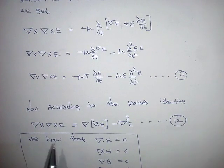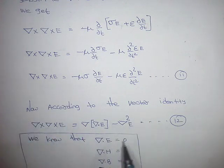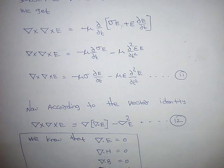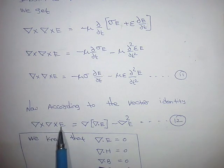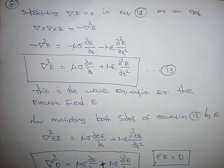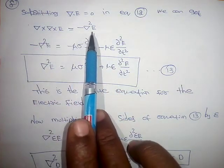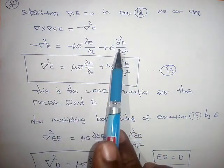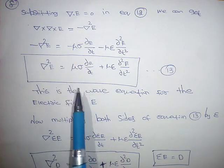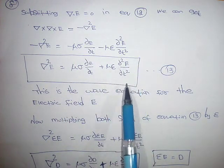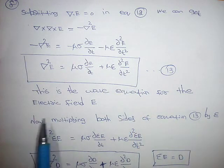Using the vector identity: del cross del cross E equals del(del dot E) minus del squared E. We already know that del dot E equals zero, so the first term vanishes. Therefore del cross del cross E equals minus del squared E. On the left-hand side and right-hand side, since both have a minus sign, they cancel, giving us del squared E equals mu sigma dou E by dou t plus mu epsilon dou squared E by dou t squared.